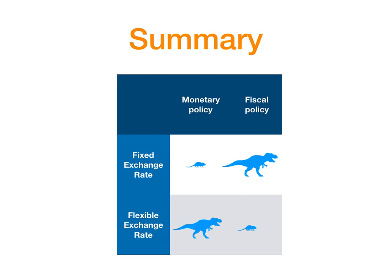So what's the summary of monetary and fiscal policy under fixed exchange rate and flexible exchange rate? When we are considering fixed exchange rate, fiscal policy is going to be more powerful — like a T-rex — and monetary policy is going to be more like a mouse. In the case of flexible exchange rate, it's the opposite: monetary policy is like a T-rex and fiscal policy is like a mouse. This concludes our discussion on the IS-LM model for small and open economies — the Mundell-Fleming model. Thank you.